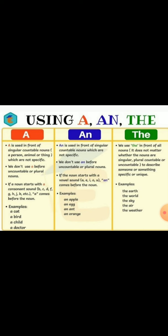The definite article, the. We use the in front of all nouns to describe someone or something specific or unique. Examples: the earth, the world, the sky, the air, the weather.